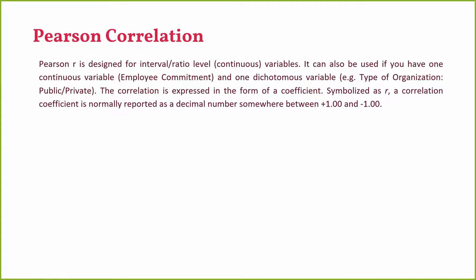The value of the correlation coefficient ranges between +1 and −1. A positive sign means the relationship between the two variables is positive. A negative sign means there is a negative relationship — an increase in one variable leads to a decrease in the other. There can be positive correlation, negative correlation, or zero correlation when there is no relationship.